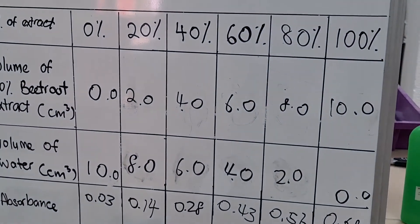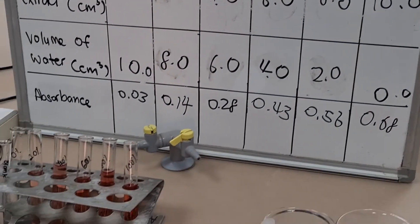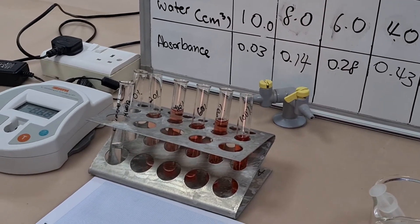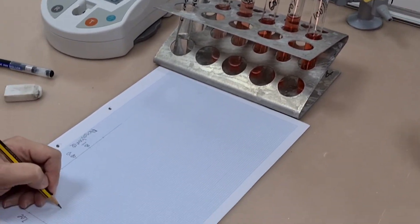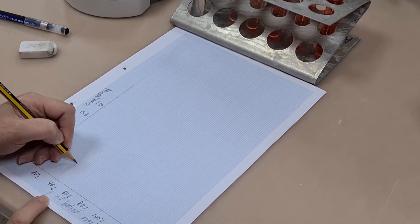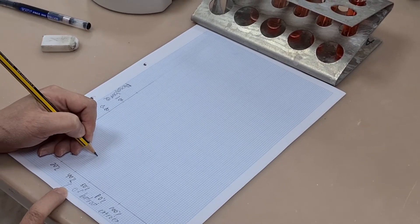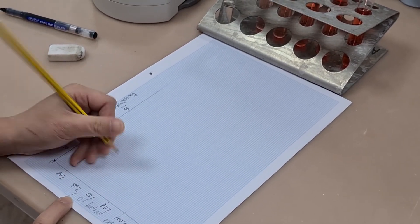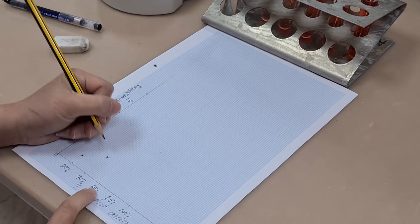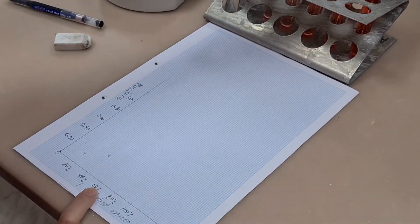The second mistake that's been made is that while there's been a zero added at the intersection of the x-axis and the y-axis, there should be two zeros on there to show that the x-axis is at zero and the y-axis is also at zero.